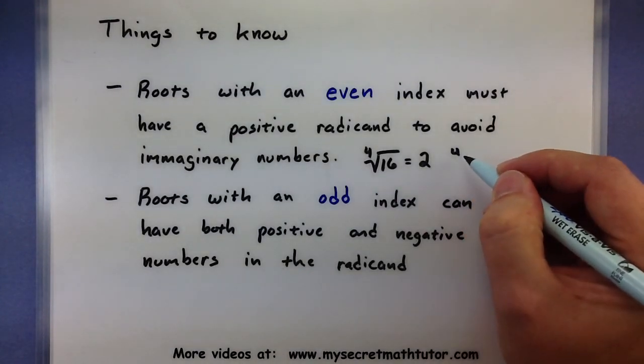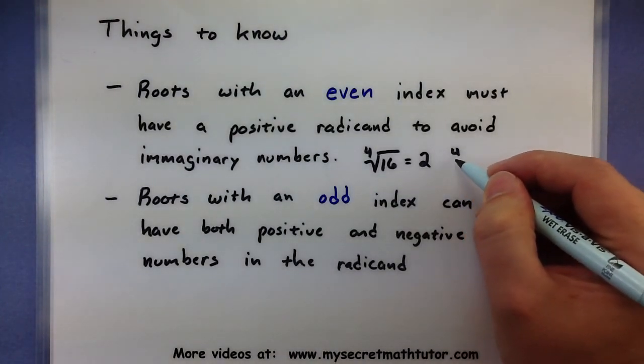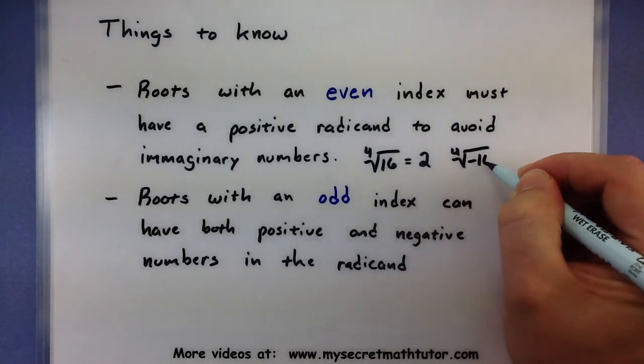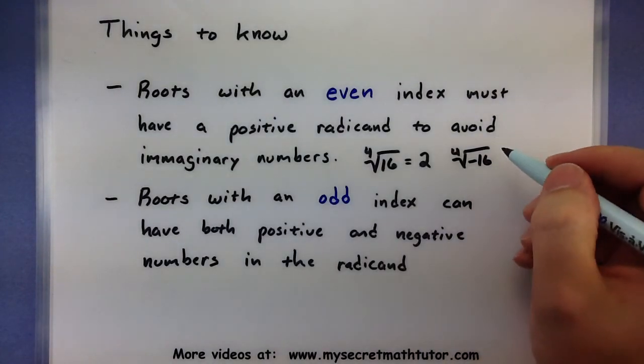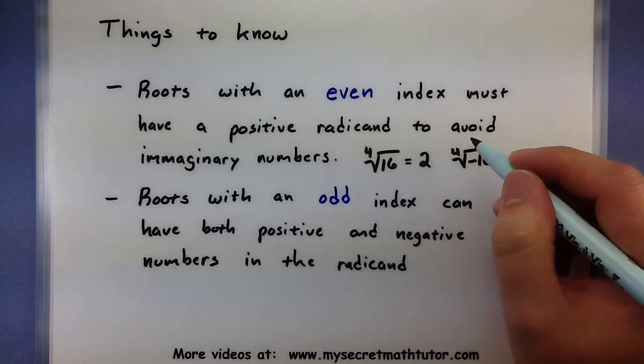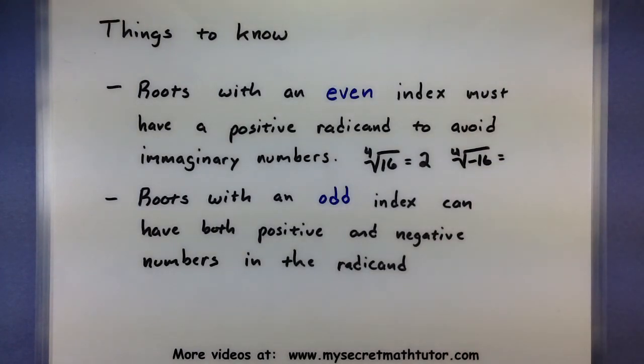If we do have a negative underneath our radical, then it's not that we can't do this, but it will produce imaginary numbers. And most of the time we're trying to avoid those imaginary numbers.